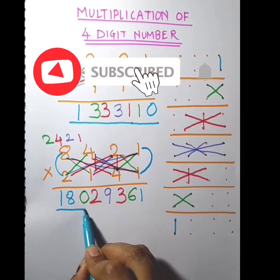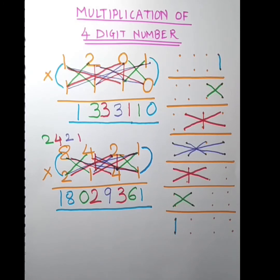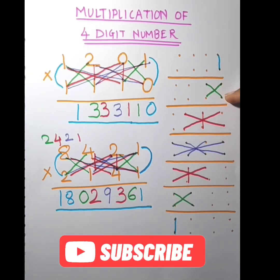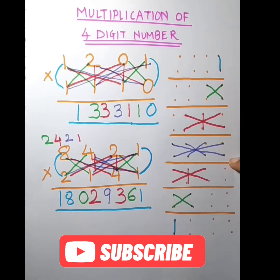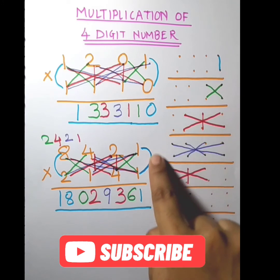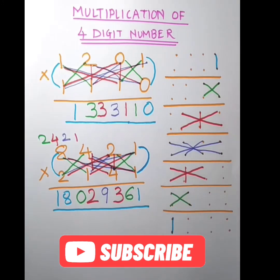The answer is 18,029,361. If you observe carefully, you can see you are using the same tricks. These two are the same as for 2-digit multiplication, and this is the same as for 3-digit multiplication. So for 4-digit, what we do is take the 3-digit multiplication steps, then add one more step, and then the reverse of it again. This is the trick for multiplication of any 4-digit number with a 4-digit number.